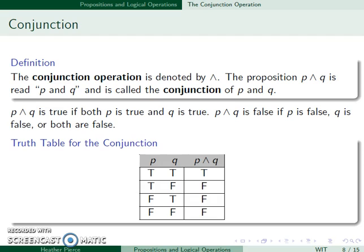So this is what the truth table looks like for the conjunction. If both P and Q are true, then P and Q is true. If P is true and Q is false, the statement's false, and so on.